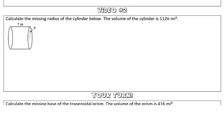In this problem, we are asked to calculate the missing radius of the cylinder below, and we are given that the volume of the cylinder is 112π miles cubed.